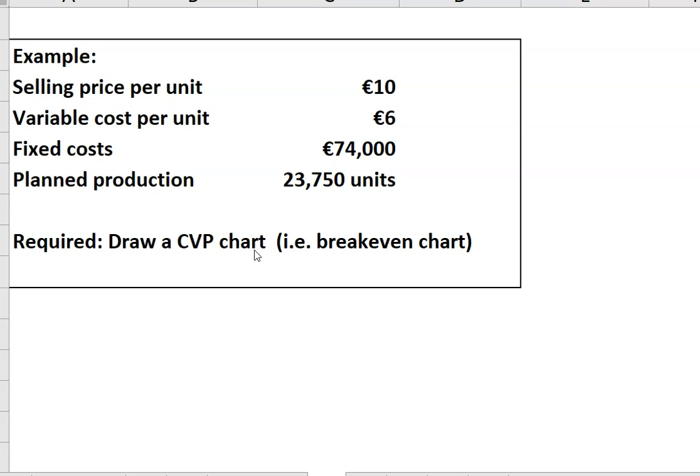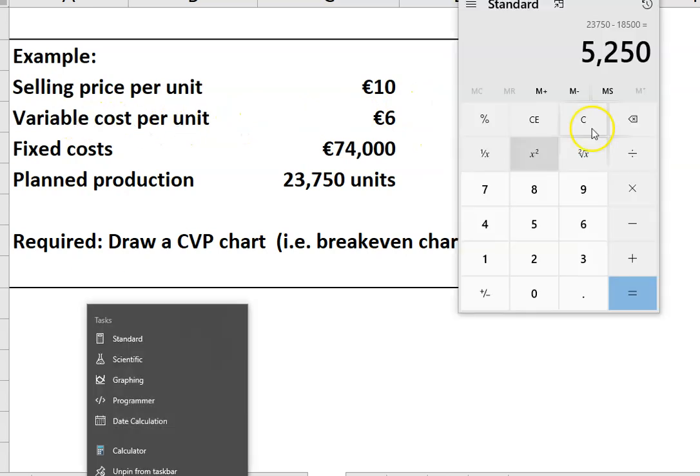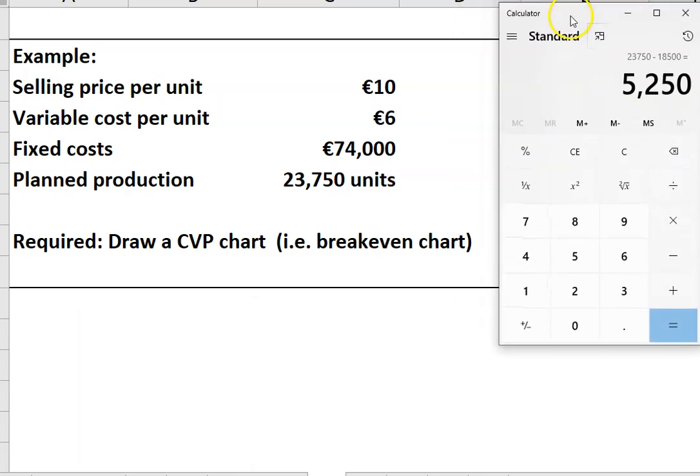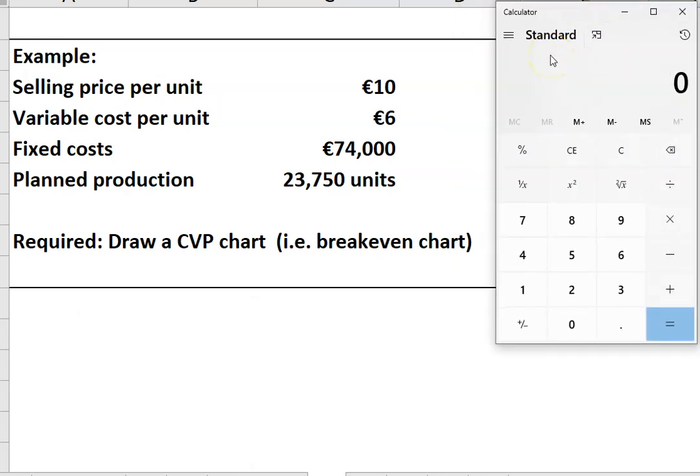Before we do the chart, you need to have calculated three things. The first is contribution per unit. Everyone should know contribution per unit, assuming some pre-knowledge. It's the difference between the selling price and the variable cost. So 10 minus 6 is 4. The contribution per unit is 4 euros.